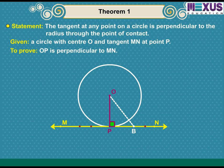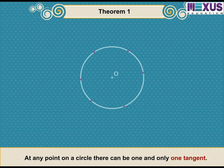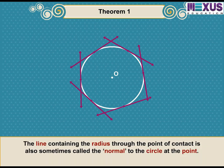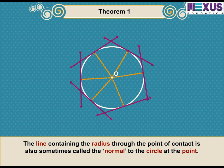Hence, by this theorem, we can also conclude that at any point on a circle there can be one and only one tangent. The line containing the radius through the point of contact is also sometimes called the normal to the circle at that point.